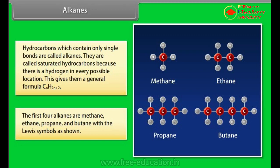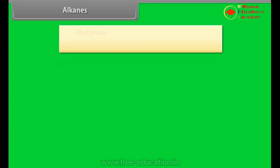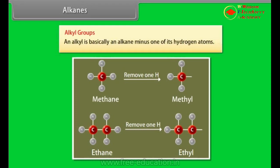Alkyl groups. An alkyl is basically an alkane minus one of its hydrogen atoms. For example, if methane removes one hydrogen, we will get methyl. Similarly, if ethane removes one hydrogen, we will get ethyl.